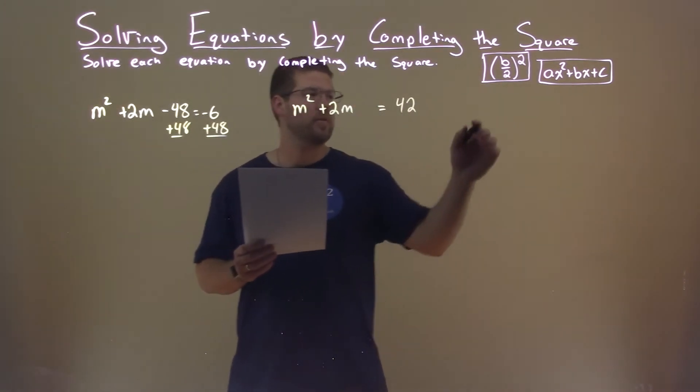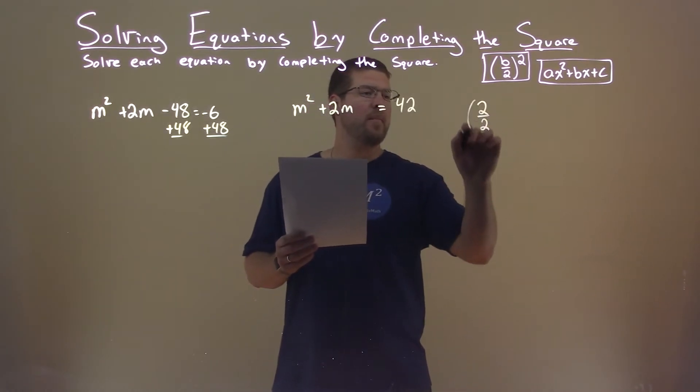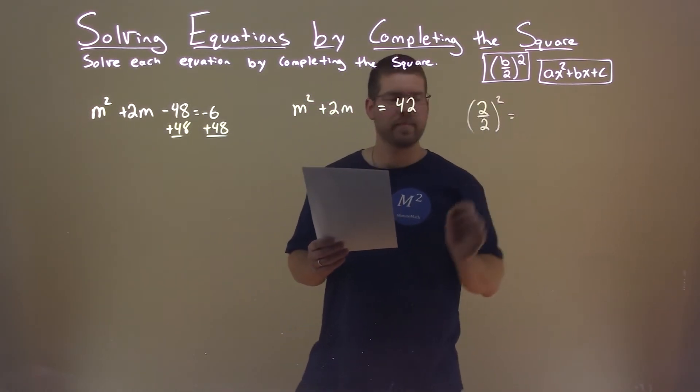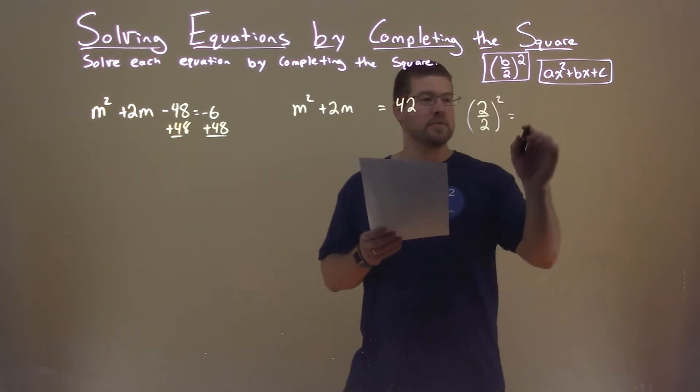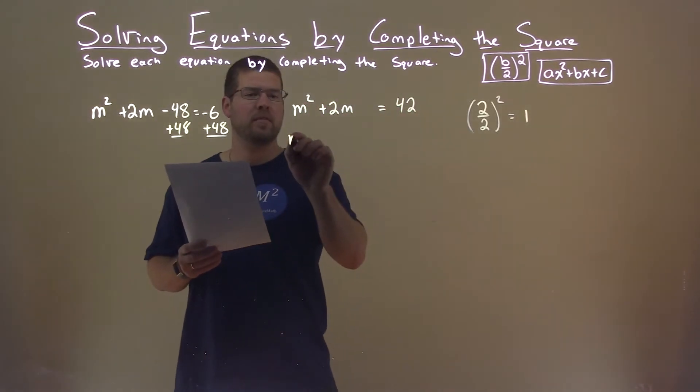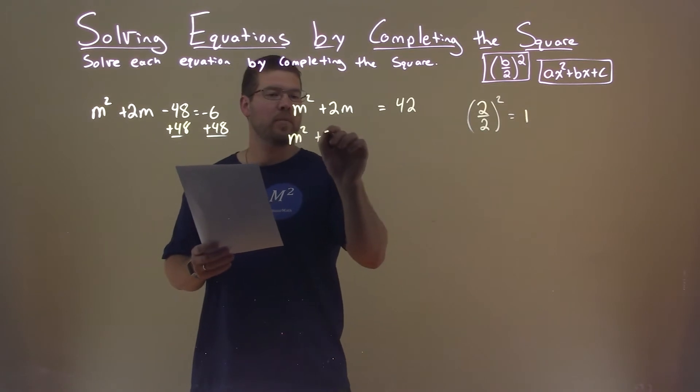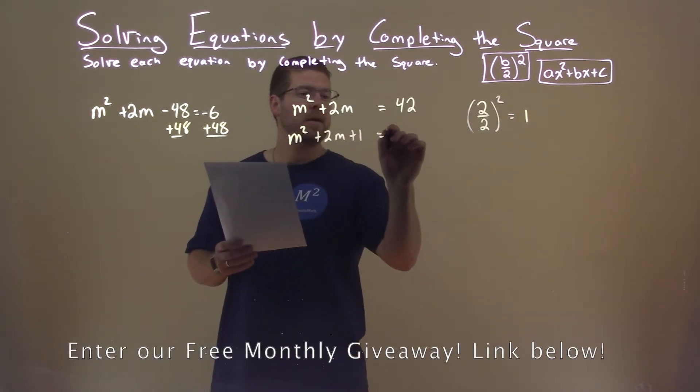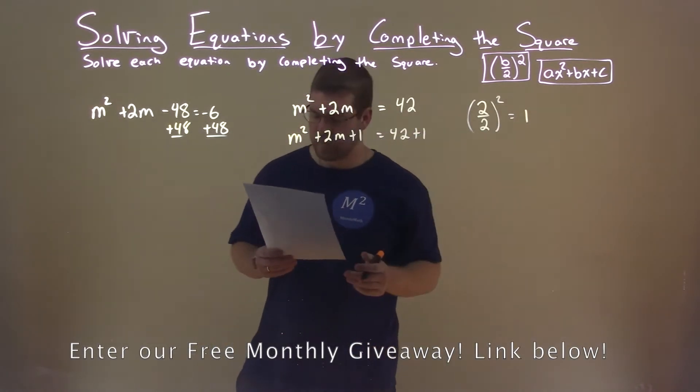I'm now going to look at my b value, which is 2. I'm going to divide that by 2 and I'm going to square it. That comes out to be just 1. So I'm going to take that 1 and add it to both sides of my equation here: m squared plus 2m plus 1 equals 42 plus 1.